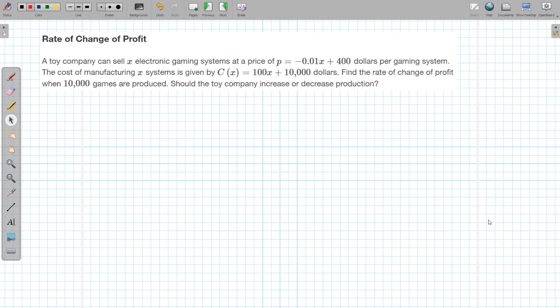So the price depends on how many they sell or put out there in the market. The cost of manufacturing x systems is given by C(x) equals 100x plus ten thousand dollars. We want to find the rate of change of profit when ten thousand games are produced. Should the toy company increase or decrease production?